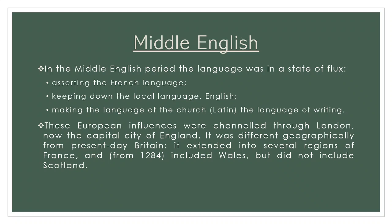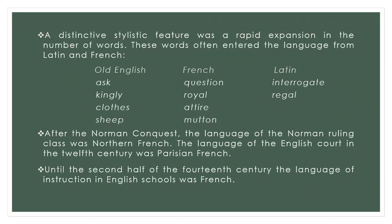Writers in what we now call the Middle English period did not necessarily always write in English. The language was in a state of flux. Attempts were made to assert the French language, to keep down the local language, and to make the language of the church the language of writing. These European influences were largely channeled through London, now the capital city of the Kingdom of England. A distinctive stylistic feature of the Middle English period was a rapid expansion in the number of words.